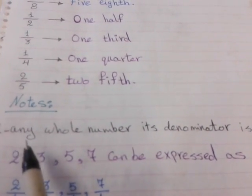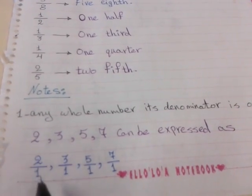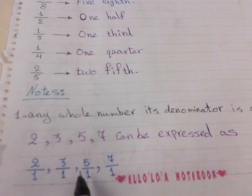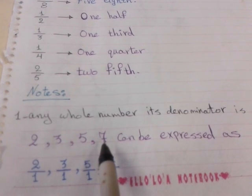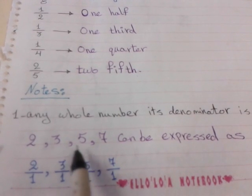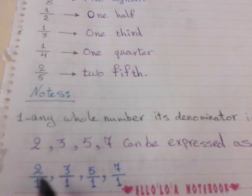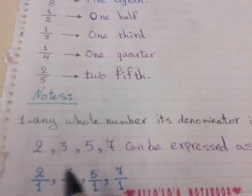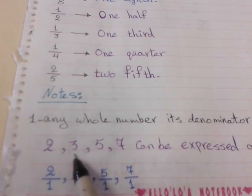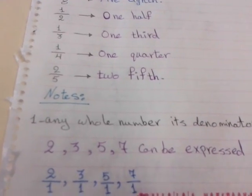We have notes about this lesson. First note: any whole number has a denominator of 1. So 2 can be expressed as 2 over 1, 3 as 3 over 1, 5 as 5 over 1, and 7 as 7 over 1. Why? Because a fraction is another name for the division sign. So 2 divide 1 equals 2, 3 divide 1 equals 3, 5 divide 1 equals 5, and 7 divide 1 equals 7.